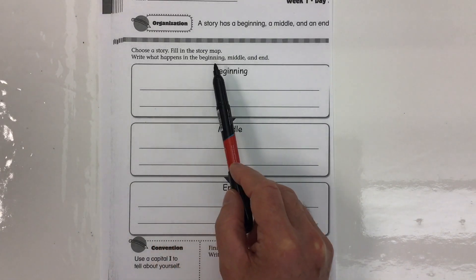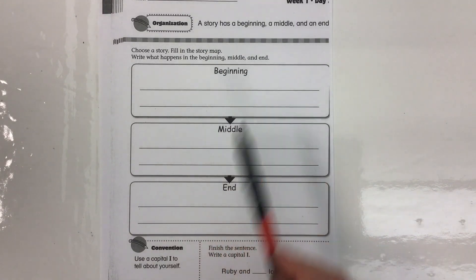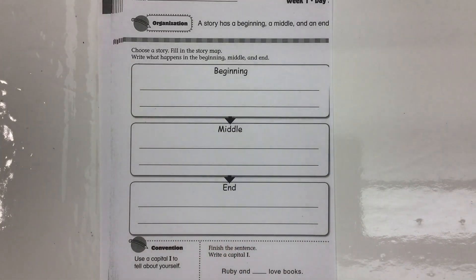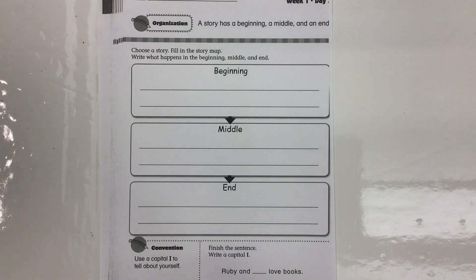The worksheet says: write what happens in the beginning, middle, and end. When it comes to writing, it's always best to choose something that you know about, so it makes it easier to write. I'm going to choose a simple subject like making a sandwich.